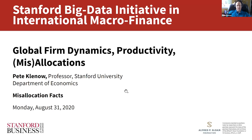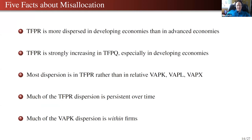I want to describe what I think are some emerging facts from the misallocation literature. One which people have persistently found is that TFPR has more dispersion in developing economies than advanced economies — so that's like the US versus China and India. People have started to fill in other countries: Mexico is closer to China and India than the US, and France is closer to the US than China and India. These differences potentially have large implications for aggregate efficiency.